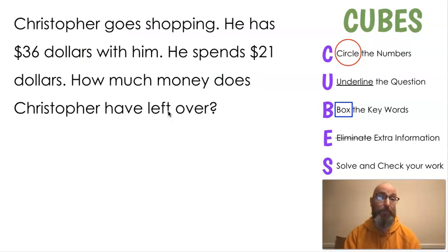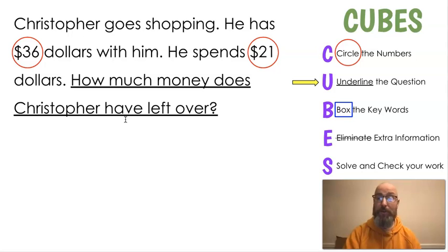Our next question is this one. Let's practice again before we solve one. Our question this time is, Christopher goes shopping. He has $36 with him. He spends $21. How much money does Christopher have left over? Again, our first step, circle the numbers. Do you see any numbers in this question? There's two. Do you see if you can find them? What are they? 36 and 21. That is correct. Next, we're going to look for the question. Remember I told you a little secret. What is it? What am I looking for? I'm looking for the question mark, which means our question is going to be right here in front of it. Our question is going to be, how much money does Christopher have left over?